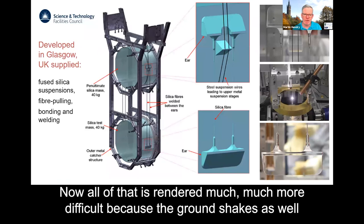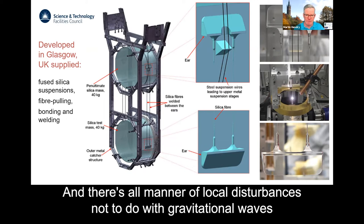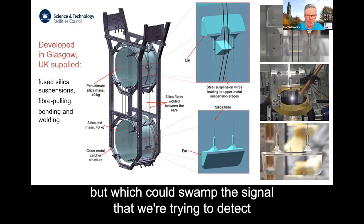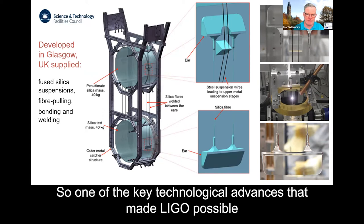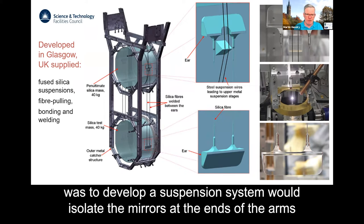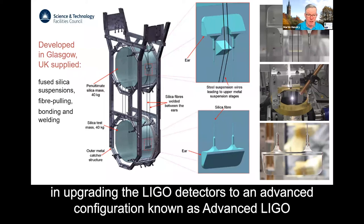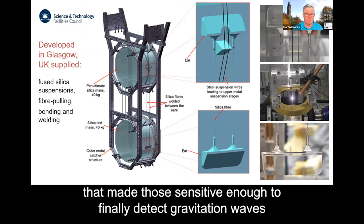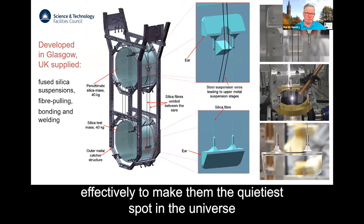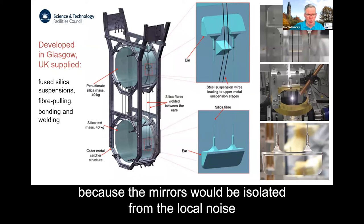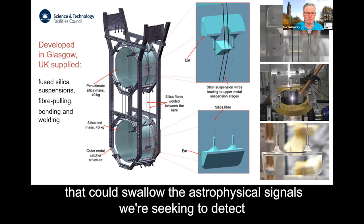Now all of that is rendered much, much more difficult because the ground shakes as well. And there's all manner of local disturbances, not to do with gravitational waves, not to do with black holes colliding out there in the universe, but which could swamp the signal that we're trying to detect. So one of the key technological advances that made LIGO possible was to develop a suspension system that would isolate the mirrors at the ends of the arms from the surrounding environment. And Glasgow played a very lead role in that in upgrading the LIGO detectors to an advanced configuration known as advanced LIGO that made them sensitive enough to finally detect gravitational waves. Effectively to make them the quietest spot in the universe, because the mirrors would be isolated from the local noise that could swamp the astrophysical signals we were seeking to detect.